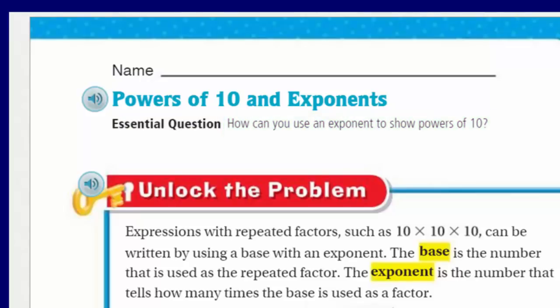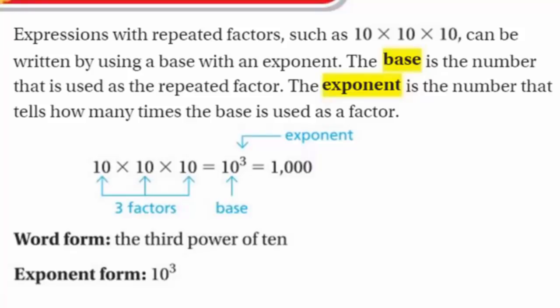Oh, this is going to be so much fun. But you know how it is, we can't do any of this, right, unless we unlock the problem. That's right, we need to unlock the problem, but it's not a real problem, real world problem, baby. Okay, let's get started here. It says expressions with repeated factors, such as 10 times 10 times 10, can be written by using a base with an exponent. The base is the number that is used as the repeated factor. The exponent is the number that tells how many times the base is used as a factor.